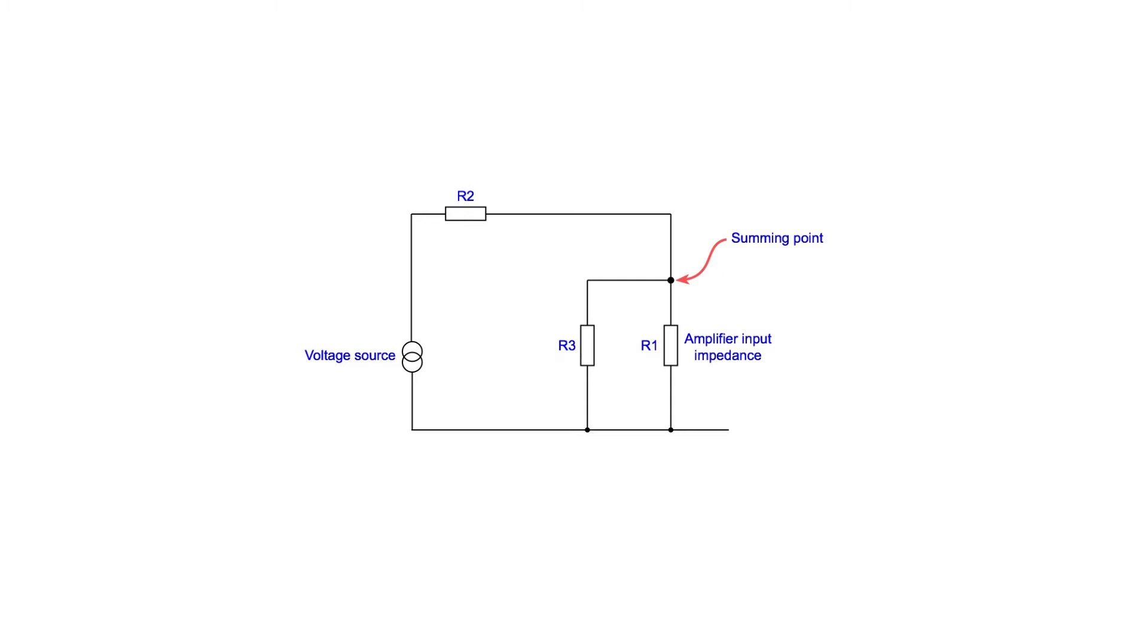It can be seen that R3, the resistance in series with the second voltage source, now appears in parallel with R1. This will mean that the signal level is reduced compared to R3 not being there.